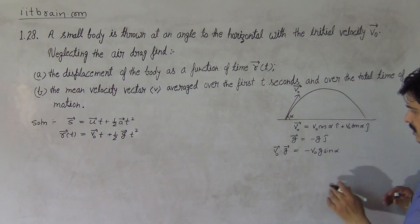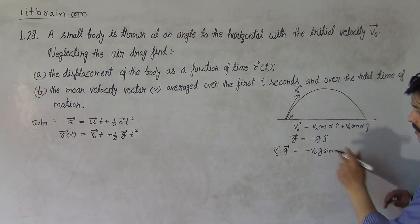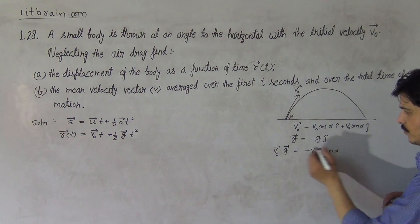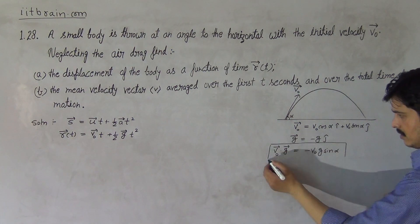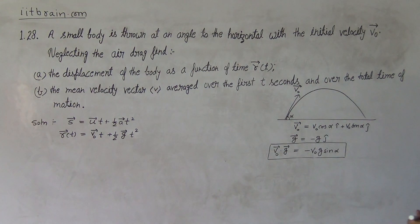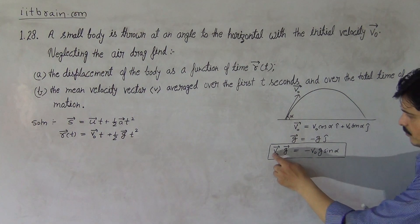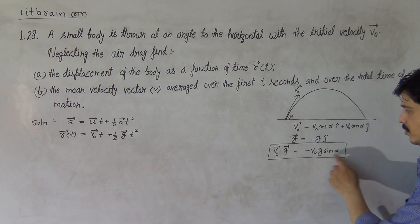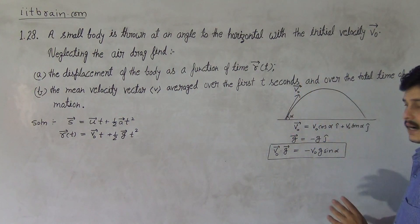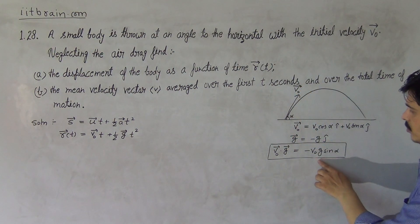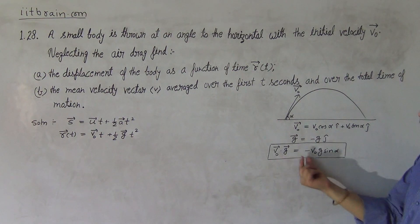The direction of g is downward, so it is written as -gĵ. Therefore, v₀ dot g equals -v₀·g·sinα. Vector g is downward and v₀ is at angle alpha, so v₀·g = -v₀g sinα. This is the expression for the dot product v₀·g.